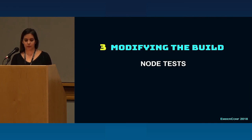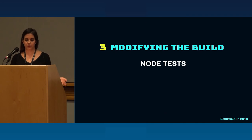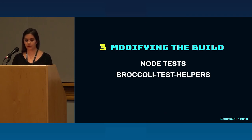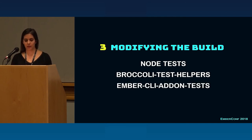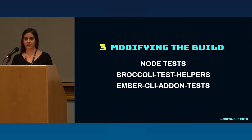So for add-ons that modify the build, we need to use node tests. We have access to broccoli-test-helpers if your add-on is a Broccoli plugin, and we can use ember-cli-addon-tests for acceptance testing.